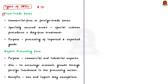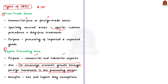Free Trade Zones are also called commercial free or foreign trade zones. These are specially secured areas with special customs procedures and duty-free treatment, generally designated for the processing of imported or exported goods. Export Processing Zones are generally used for commercial and industrial exports. The main goal of creating EPZ is to increase economic growth through foreign investment in the processing sector. EPZ offers benefits such as tax and import duty exemptions.